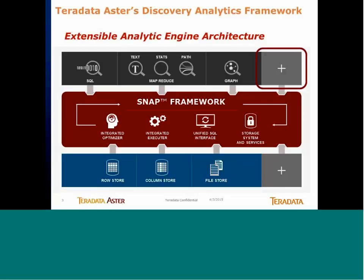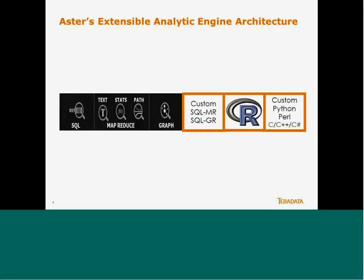I don't want to focus too much on Aster itself — I want to really focus on R. But let's just visualize how this works in a larger scheme where Aster is designed from the ground up to be an extensible system integrating multiple different types of analytic functions, multiple types of data storage, with a SNAP framework that handles all the technical stuff under the scene. The next slide dives into how we expand the functionality of Aster and include R — really defining a centralized analytic hub where you can do many different things from one place. R is just one of those areas you can plug in.